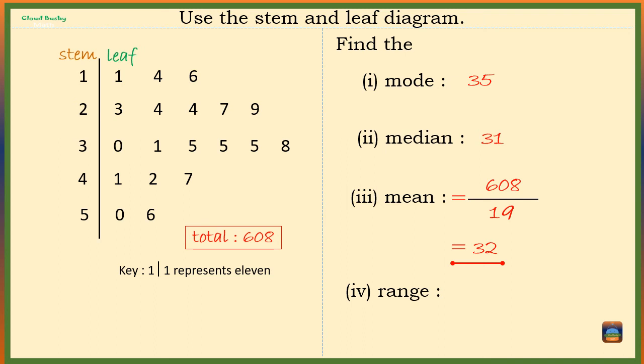Lastly we are going to find the range. The range is so simple to find. It is the difference between the biggest and the smallest values that we have. So the biggest value in our data set is 56 minus the smallest value is 11. That means the range is 45.